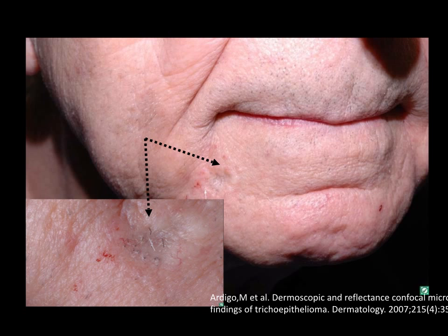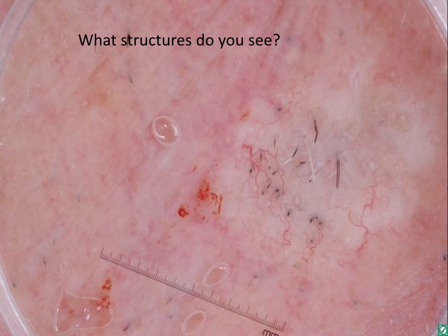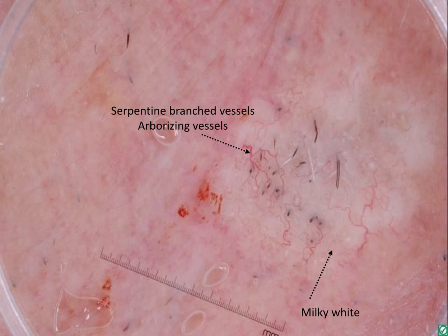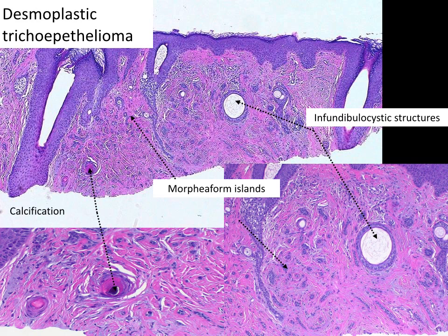Here's another case with a lesion on the chin with a raised border and a central indentation. What are the structures you see? Once again, there's a shiny white background with a few milia cysts and arborizing vessels. Once again, on pathology, this revealed a desmoplastic trichoepithelioma.